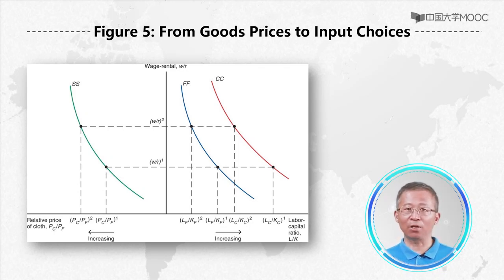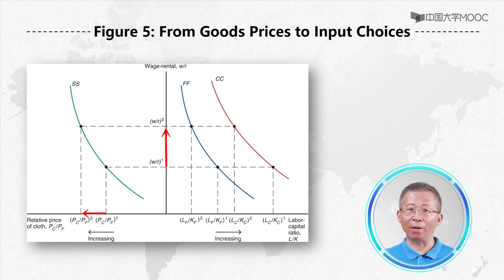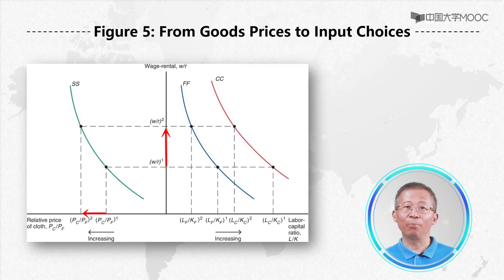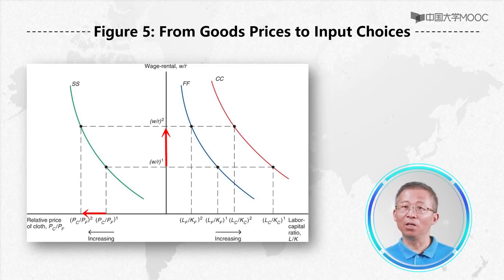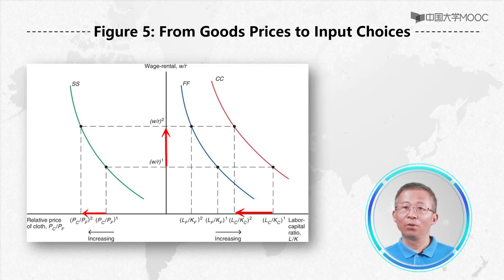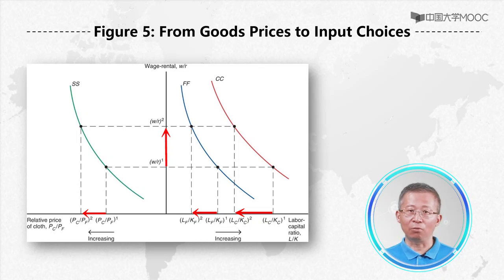Suppose the relative price of clothes Pc/Pf rises to the level Pc/Pf 2. The relative wage would also rise from W/R 1 to W/R 2, because labor is now relatively more expensive. The ratio of labor-to-capital employed in production of clothes and food would therefore drop from LC/KC 1 to LC/KC 2, and from LF/KF 1 to LF/KF 2 respectively.